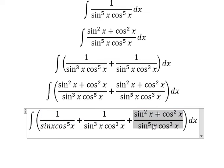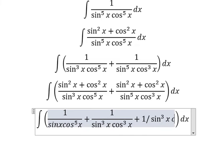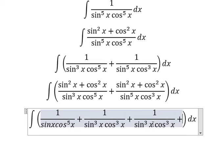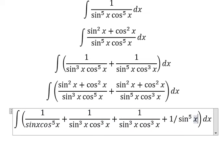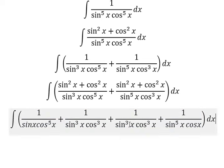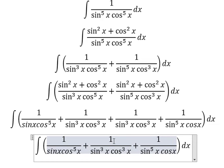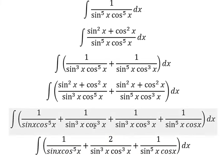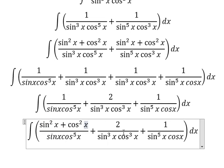Similar for the next one. Now we continue to do this process. We put about number one, that's about sine squared x plus cosine squared x. Similar for this one.